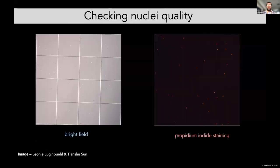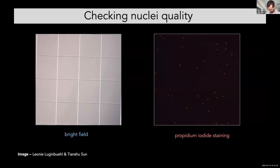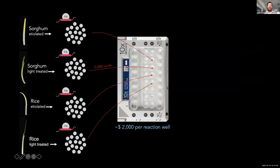Before you load on the chip, as other speakers have said, you want to visualize your nuclei using propidium iodide staining so you can distinguish correct nuclei from debris. After you've run each of your samples through that workflow, you're then ready to load them onto the chip.